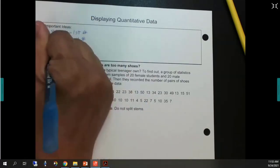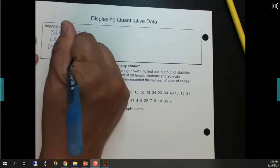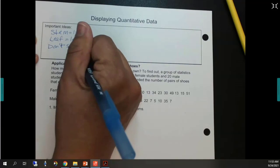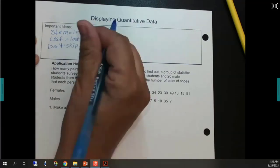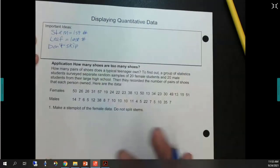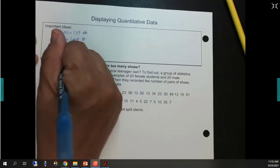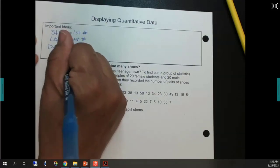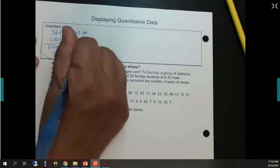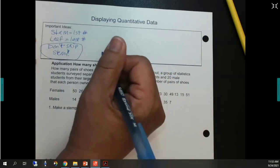Don't skip stems. So, if you actually, let's say on my test grades, I had 70s, then no one made a 60, and then I had 50s. I'd still have that sixth stem, it would just be empty.